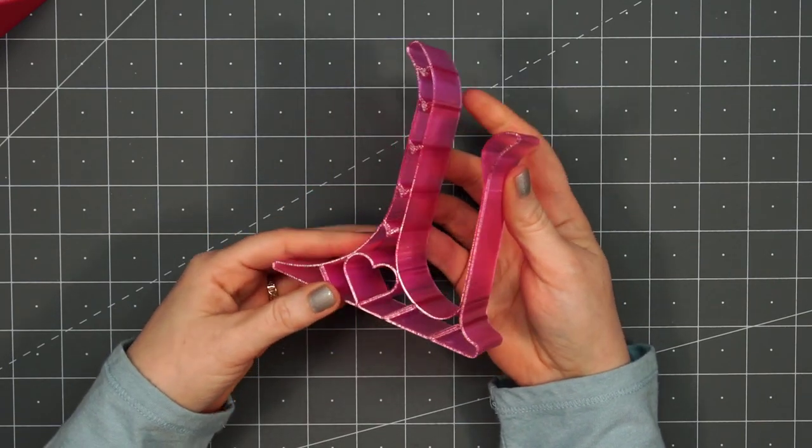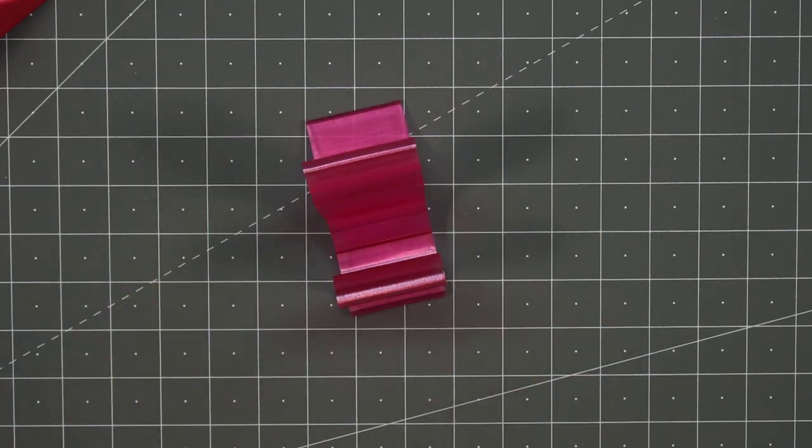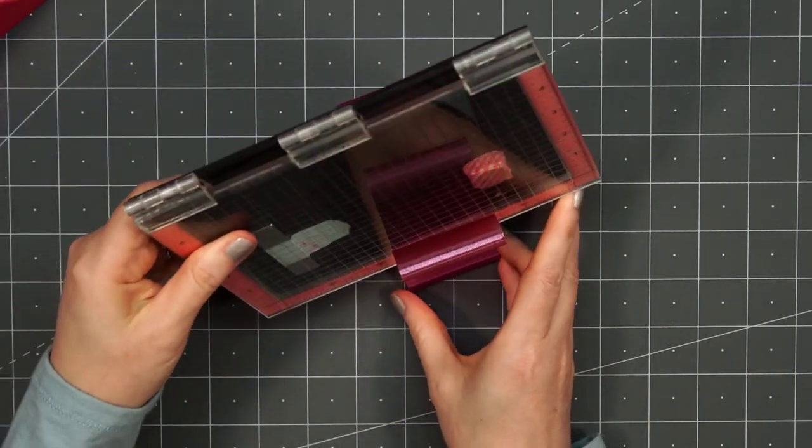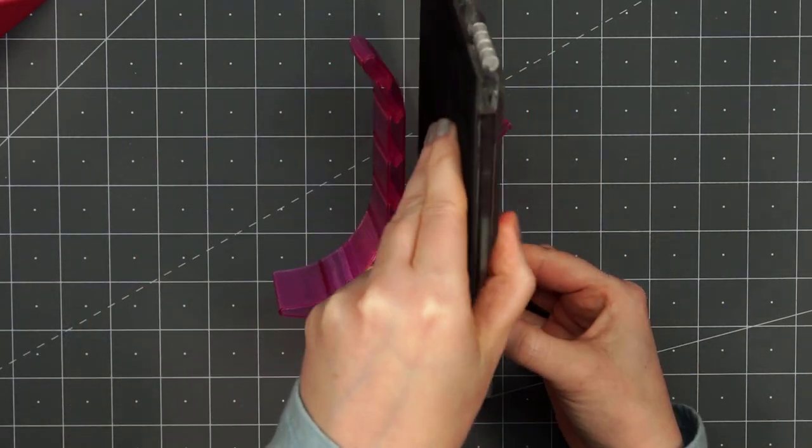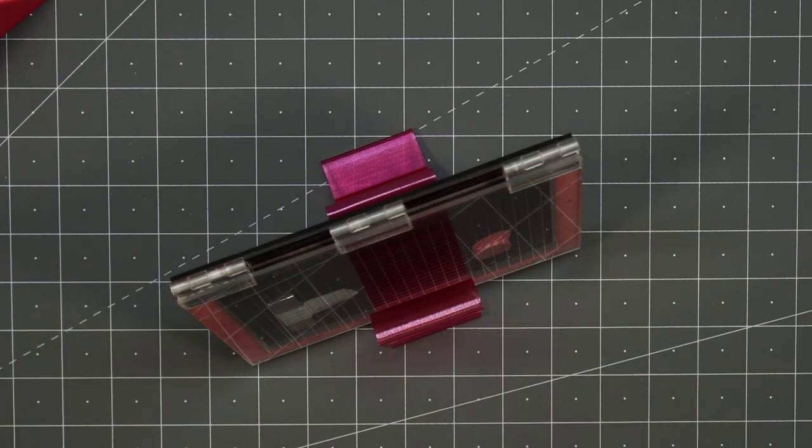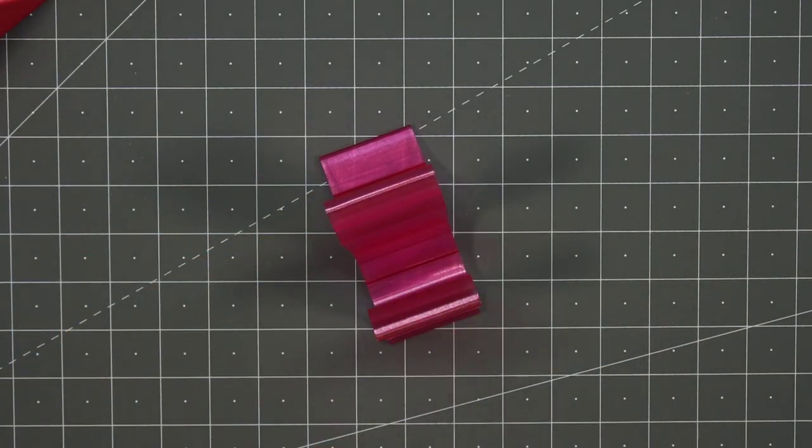You can store all kinds of tools in here and it'll free up some of your desk space. So you could put your MISTI in here. It holds it very nicely. It also holds the larger size MISTI or other stamp positioning tools. You can even put a couple of them in there.